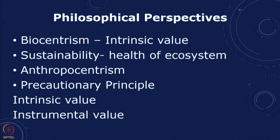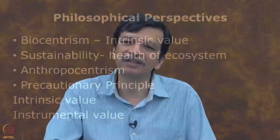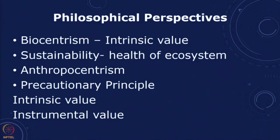We will look at essentially three philosophical perspectives. The first is biocentrism, which focuses on the fact that every living organism has an intrinsic value. The second is a sustainability perspective, where we want to preserve the health of the ecosystem. The third is a human-centric or anthropocentric perspective. Depending on your value system — whether biocentric, sustainability-oriented, or anthropocentric — it will result in different kinds of choices. In general, people will have a multiplicity of views and will not be at any extreme, but it is useful to understand the philosophical differences between these three perspectives.